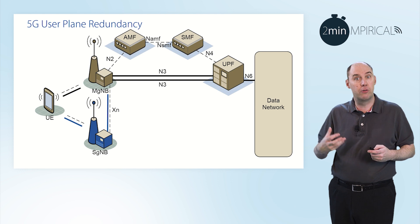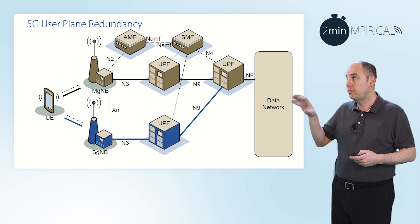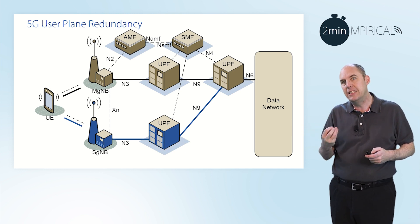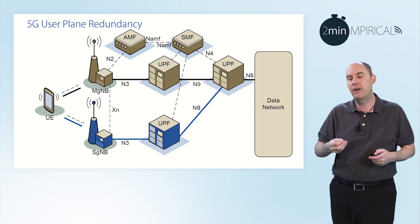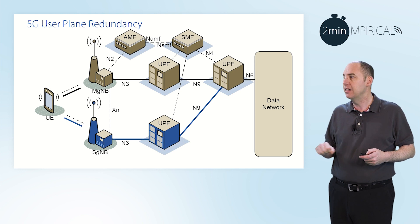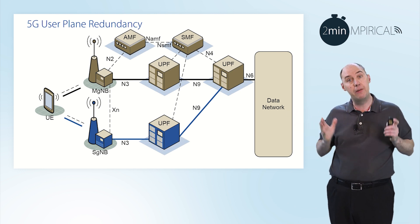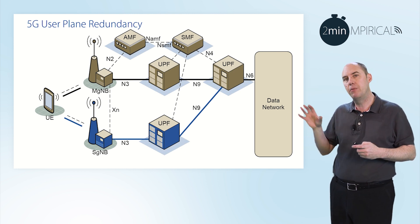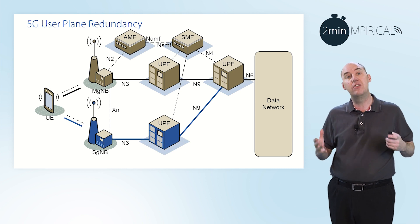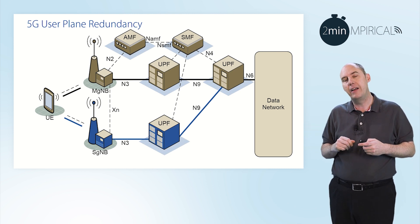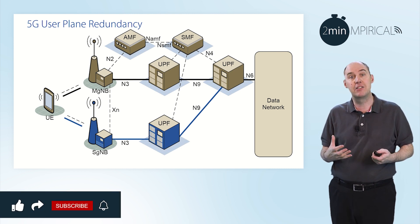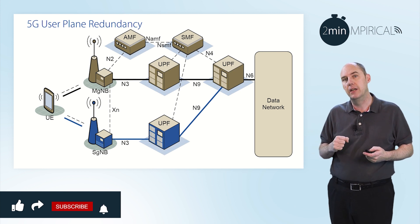So we look at other alternatives, and the next step would be to potentially introduce two intermediate User Plane Functions — a feature of 5G — anchoring on the same UPF next to the N6 interface. This way we're using the master and the secondary for our user planes, sending them through two different N3s to two intermediate UPFs, and into the core anchor UPF out towards the data network — drastically improving that redundancy aspect.